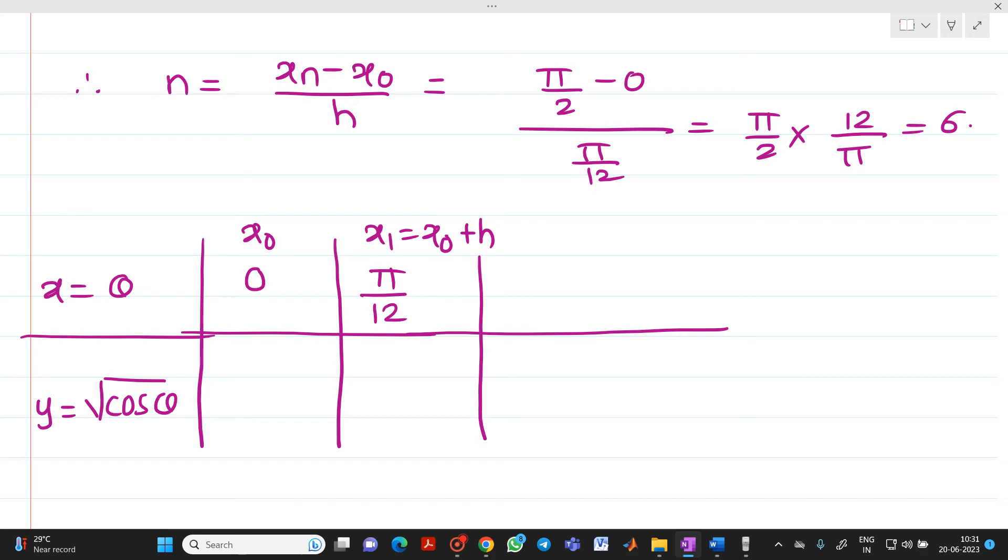Third value, x₂ will be equal to x₁ plus h. That is π/12 plus π/12 is nothing but 2π/12 or you can write it as π/6 also. Next value will be x₃ will be 3π/12.